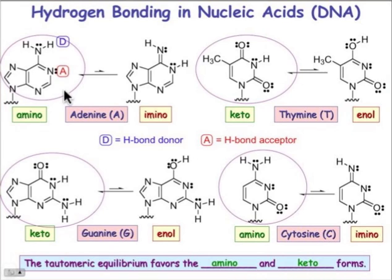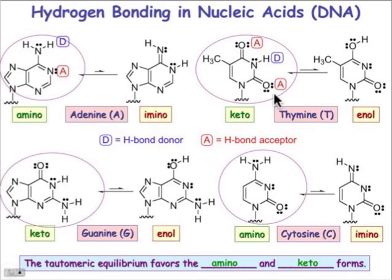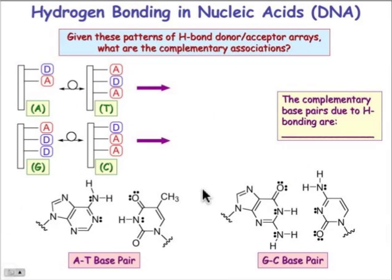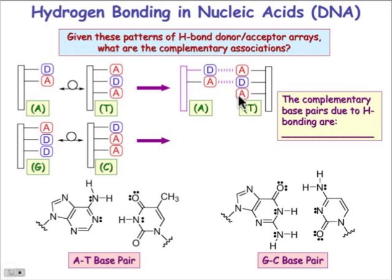In the correct tautomeric form of adenine, we have a donor and an acceptor, and that matches complementarily with the acceptor-donor interaction present in thymine. So A-T pairing involves a donor-acceptor on adenine complementing acceptor-donor on thymine, with an extra keto group on thymine that doesn't participate in base pairing. This gives A-T pairing a D-A / A-D arrangement, with one acceptor on thymine that lacks a matching donor on adenine.